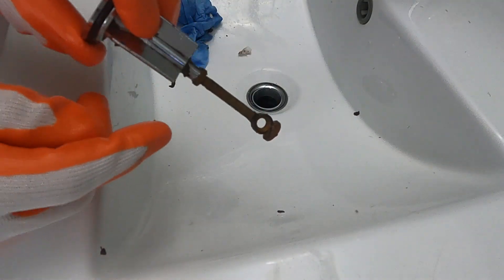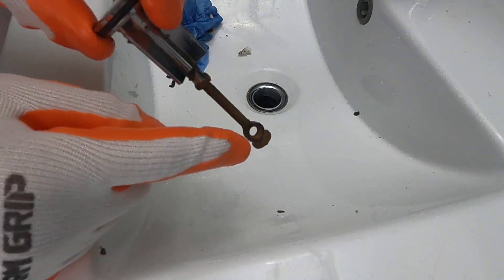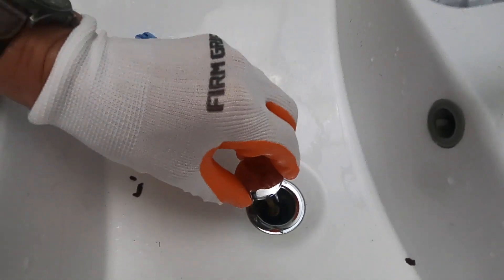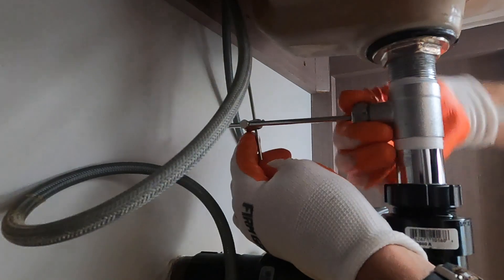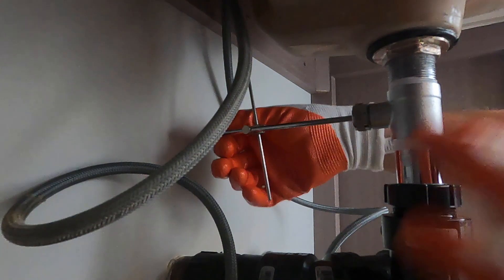Some of these are going to look different than others, but it's, you know, that facing towards the back. Place that back down in and put that back through. Do this up hand tight. If you feel like you need to use your pliers to do it up, then give it a little snug, but you should be able to just do it up hand tight.